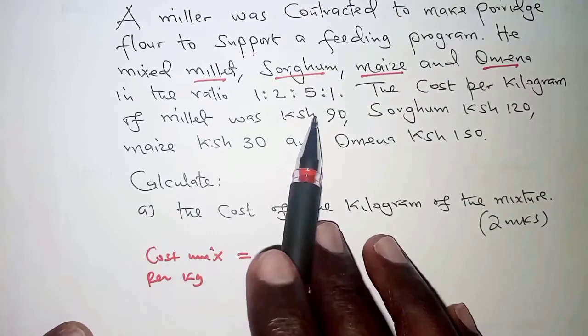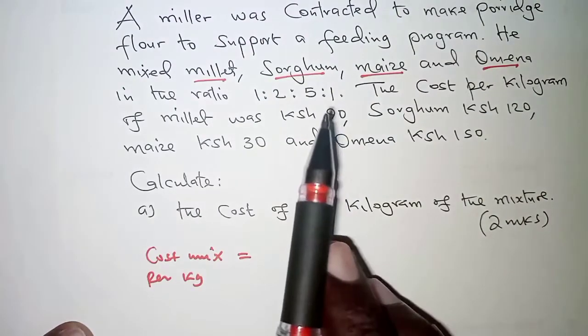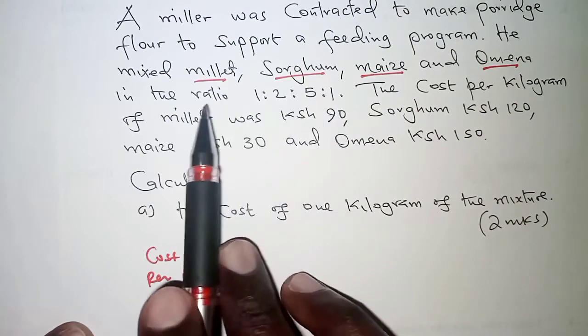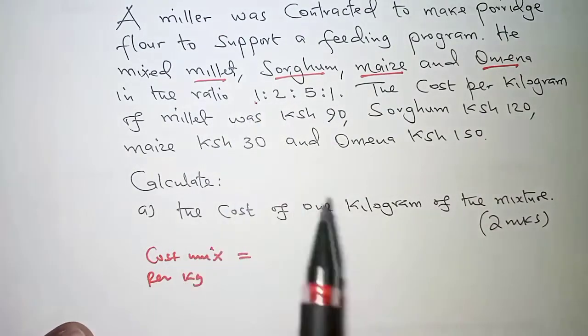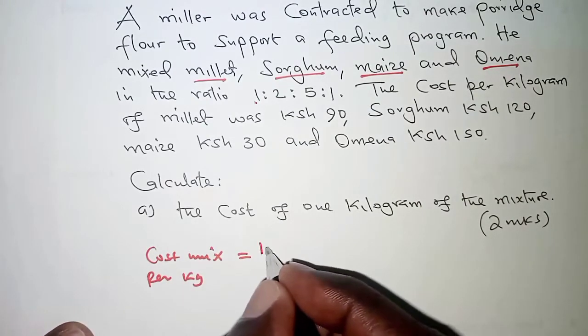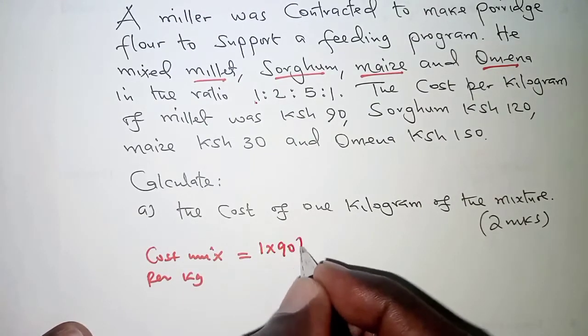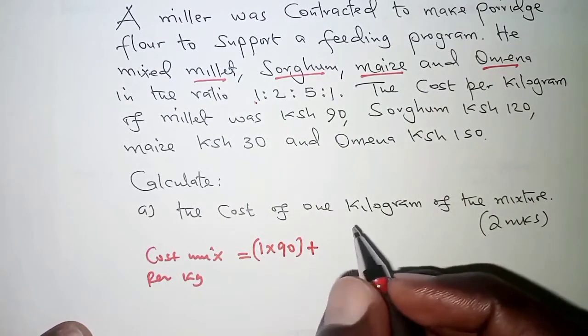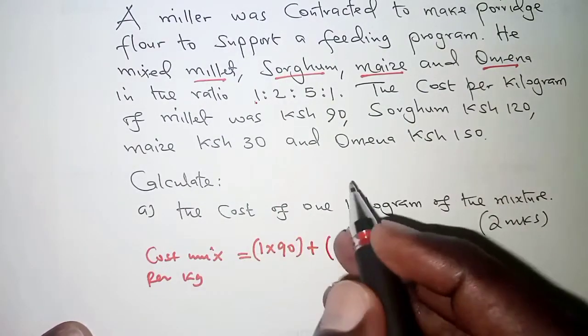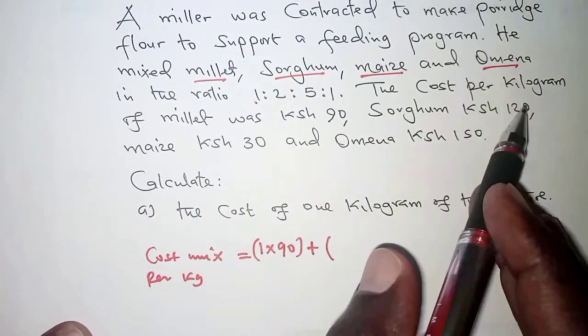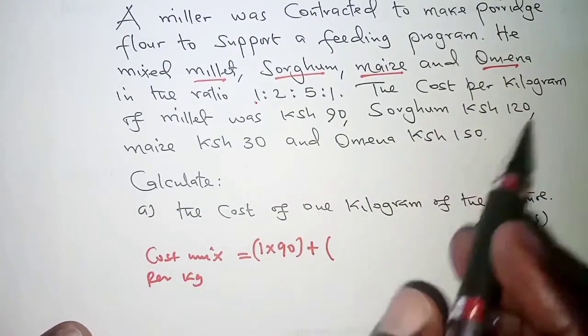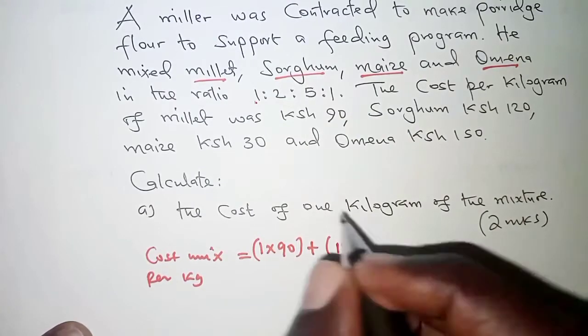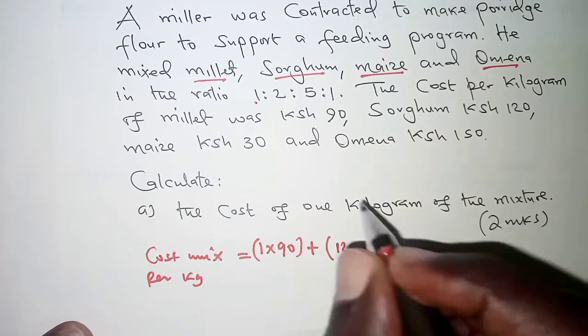We will have the cost of millet per kilogram as 90 shillings, and how many kilograms? 1 kilogram. So we have for millet, 1 kilogram times 90 shillings for every kilogram. And then we'll have to add that to sorghum. So we have for sorghum, the cost is 120 shillings per kilogram. And there are how many kilograms? We have 2 kilograms.